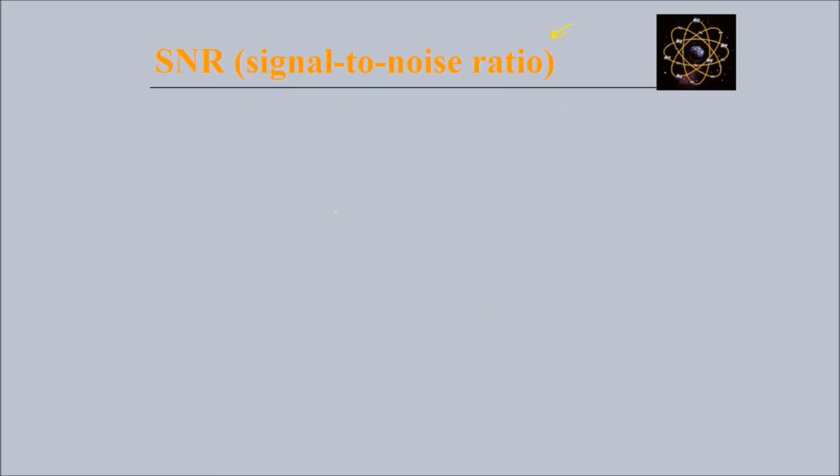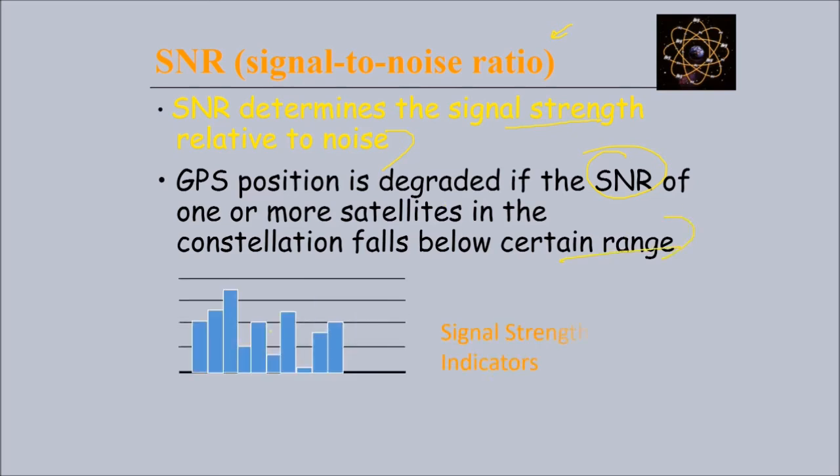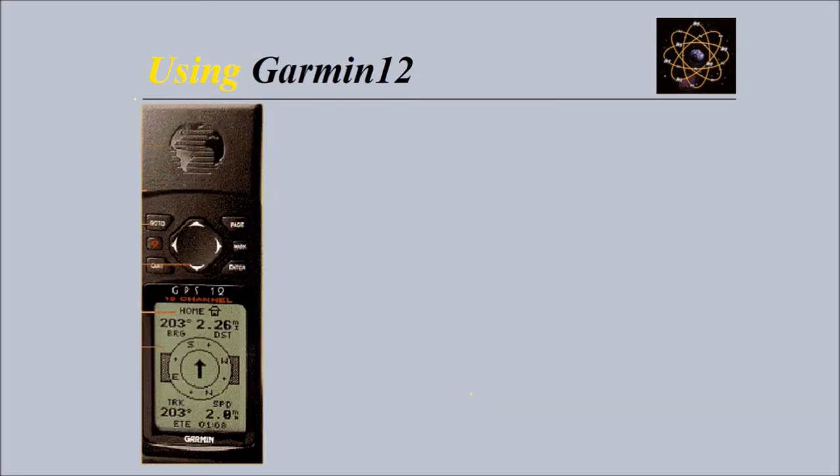When we talk about signal-to-noise ratio, SNR determines the signal strength relative to noise. GPS position is degraded if the SNR of one or more satellites in the constellation falls below a certain threshold value. These are the signal strength indicators.